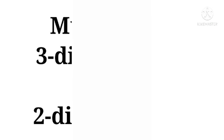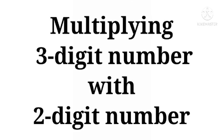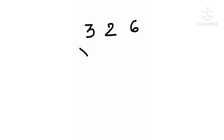Now, how do we multiply a three-digit number by a two-digit number? Suppose we have to multiply 326 by 14. We write the columns — 1s, 10s, 100s — and we always start the multiplication from the 1s place.